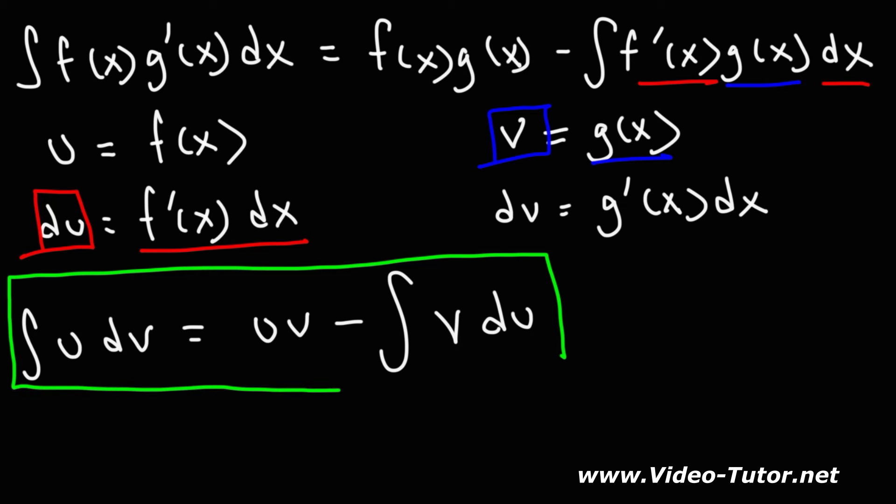The integral of u dv equals uv minus the integral of v du. That's how you could derive it. For those of you who want some example problems on how to use this formula to integrate certain expressions, feel free to check out the links in the description section below. I'm also going to include some more difficult examples that relate to integration by parts.